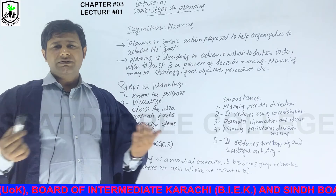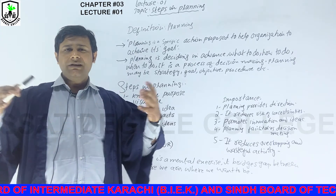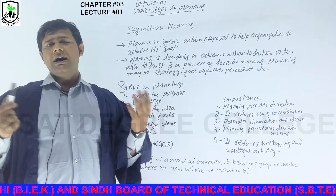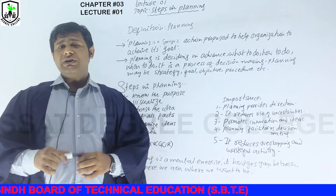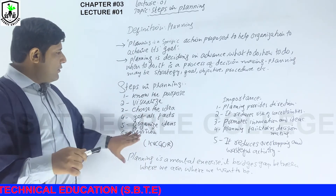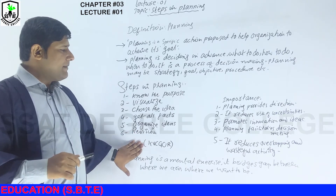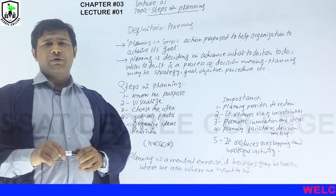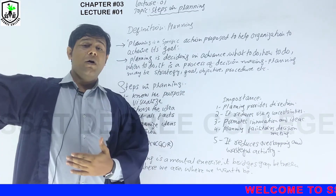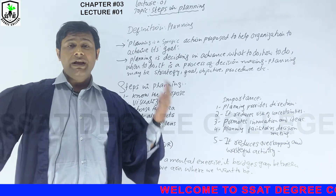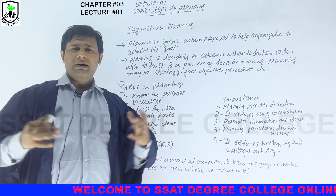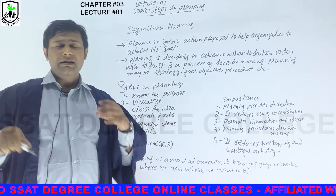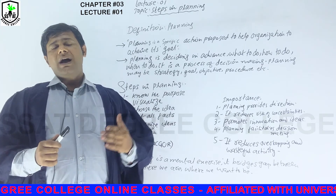Then when we want to convey, it will be very easy for us because things will be organized and arranged. It will be easy for us to achieve our task; it will be easy for the organization to achieve its strategies and goals. We can say that planning is a mental exercise — it bridges the gap between where we are and where we want to be. We have to plan, think, get facts and figures, jot down ideas, revise, and then implement it.